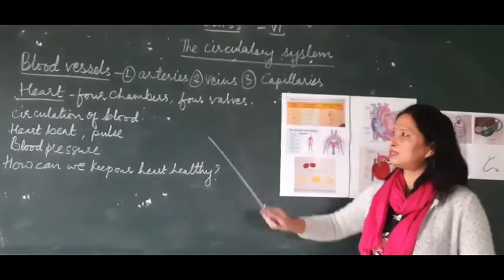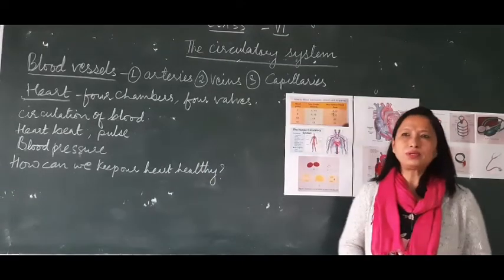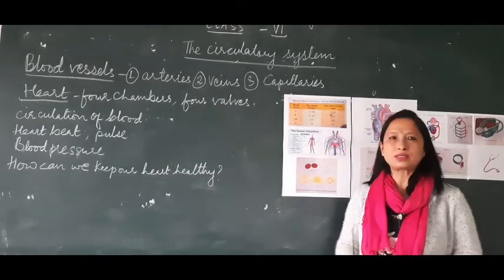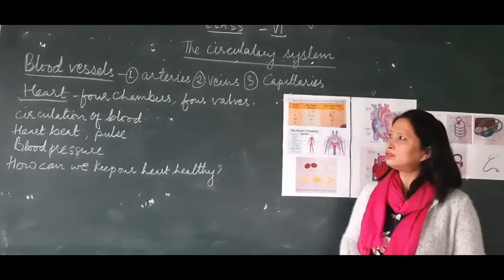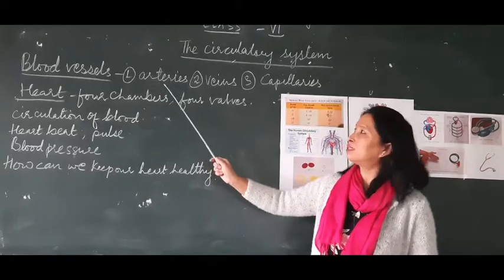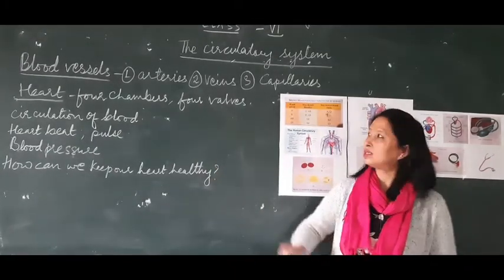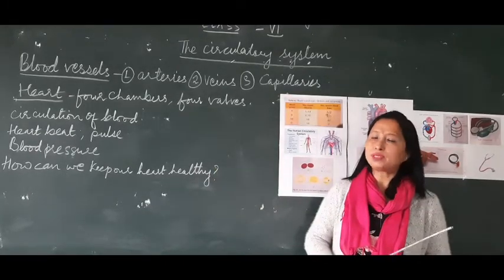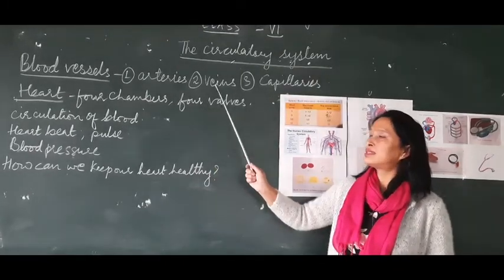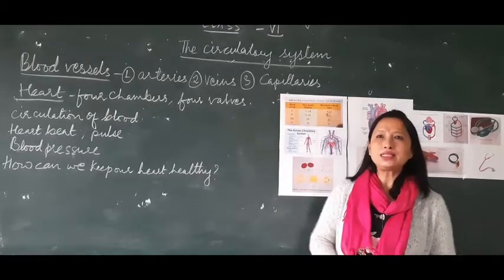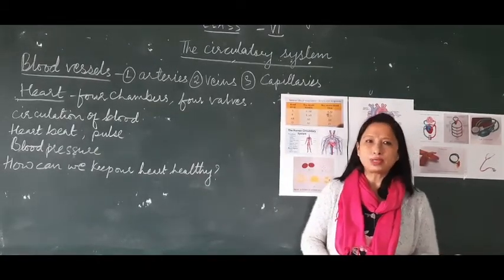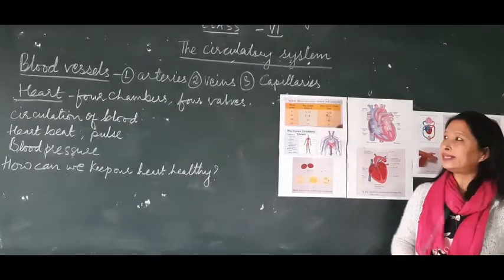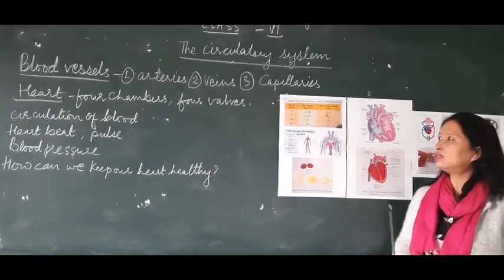Blood vessels are tube-like structures through which blood is carried to different parts of the body. There are three types of blood vessels: arteries, veins, and capillaries. Arteries carry oxygen-rich (oxygenated) blood from the heart. Veins carry deoxygenated (oxygen-poor) blood. Capillaries are the smallest blood vessels and they connect the venules and the arterioles.